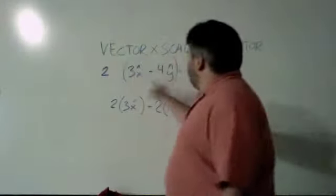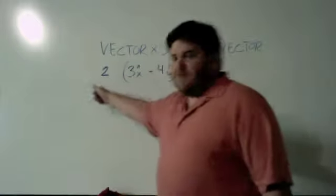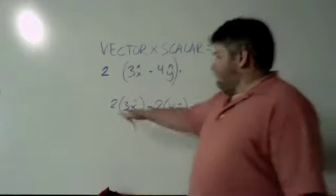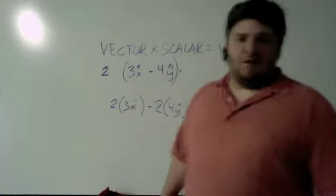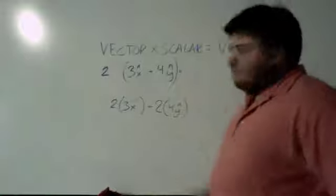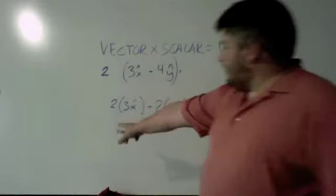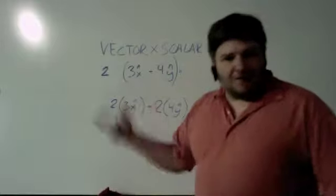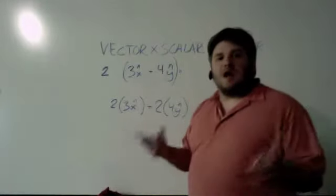So all that means is that when I multiply it by 2, I'm going to have 2 times 3x hat plus 2 times 4y hat. We're still dealing with this exact same process. It's treated just like mathematics. If I was left with the 3x plus 4y hat times 2, then I'd have to distribute that 2 to both of those terms. Do the same thing with vectors.